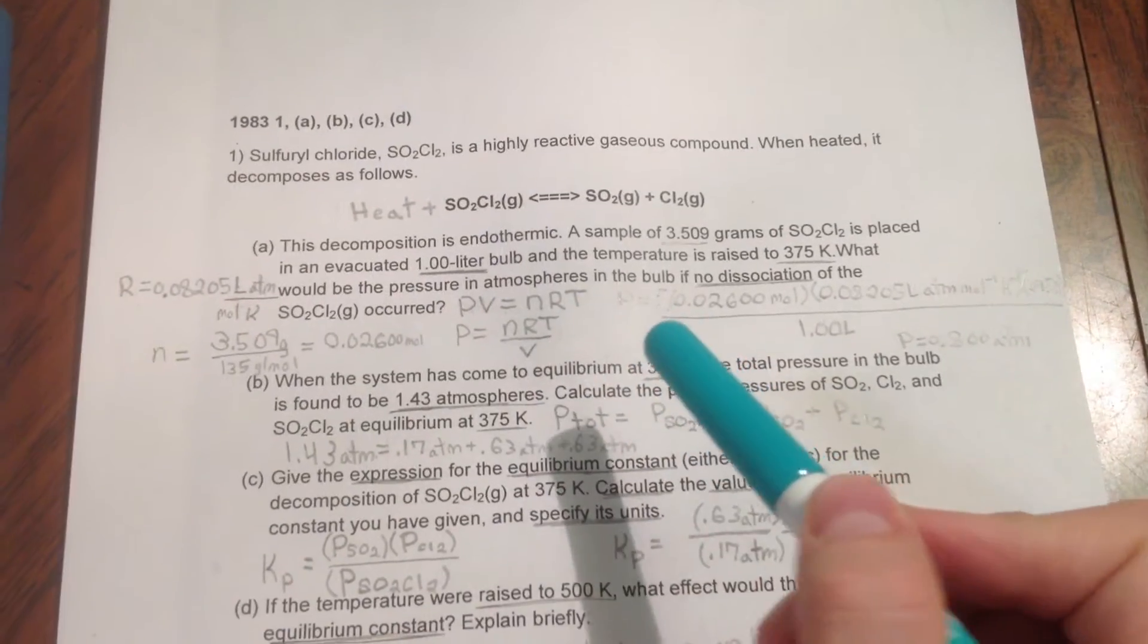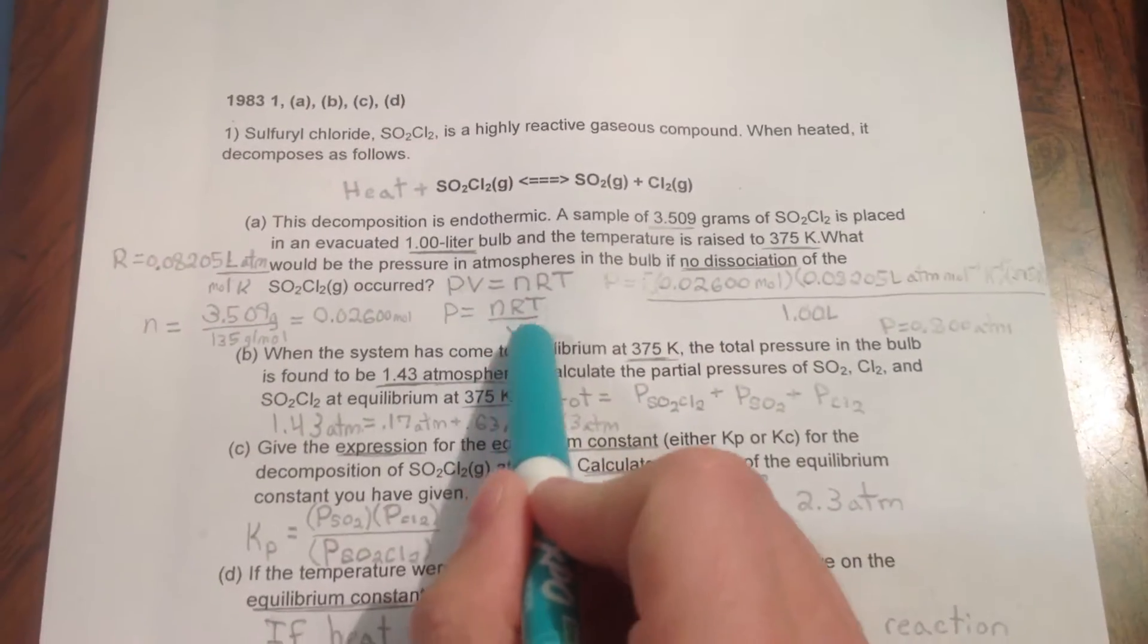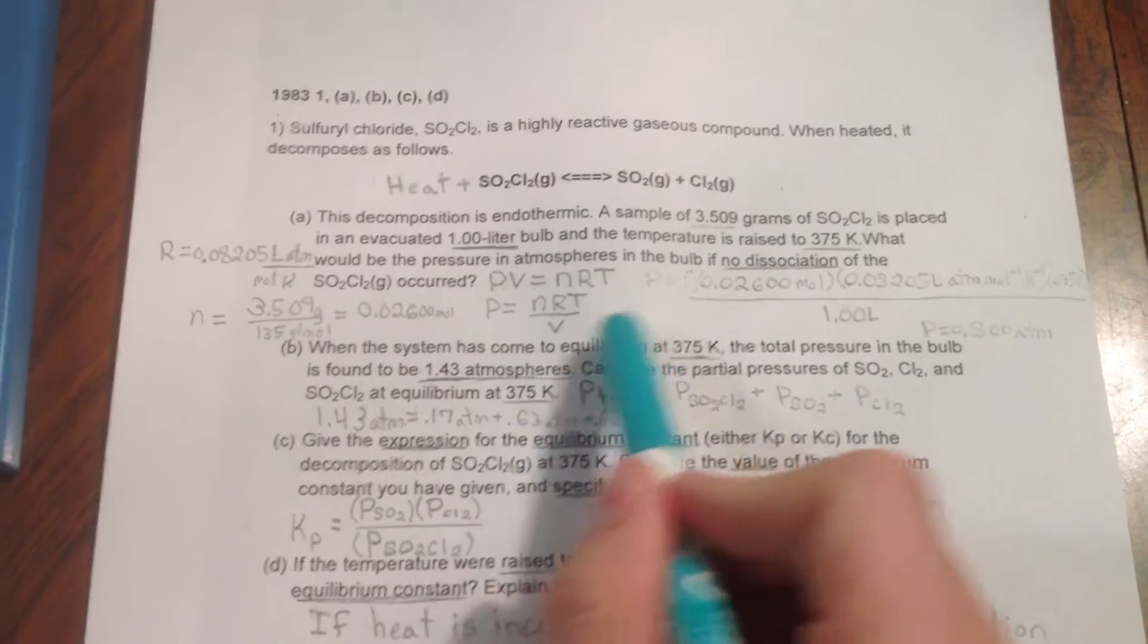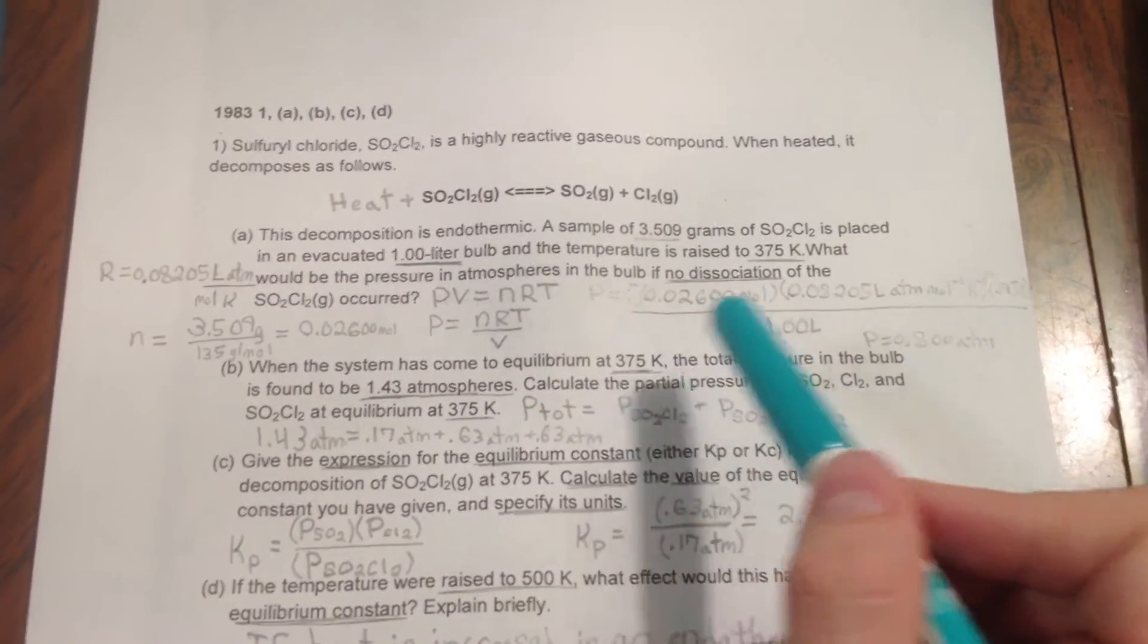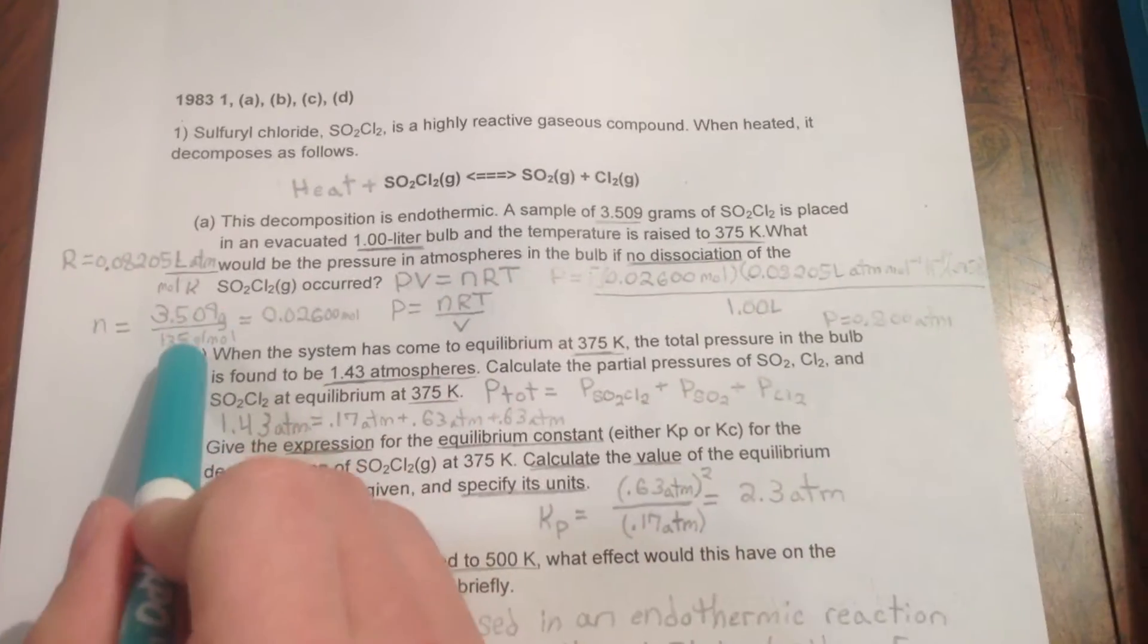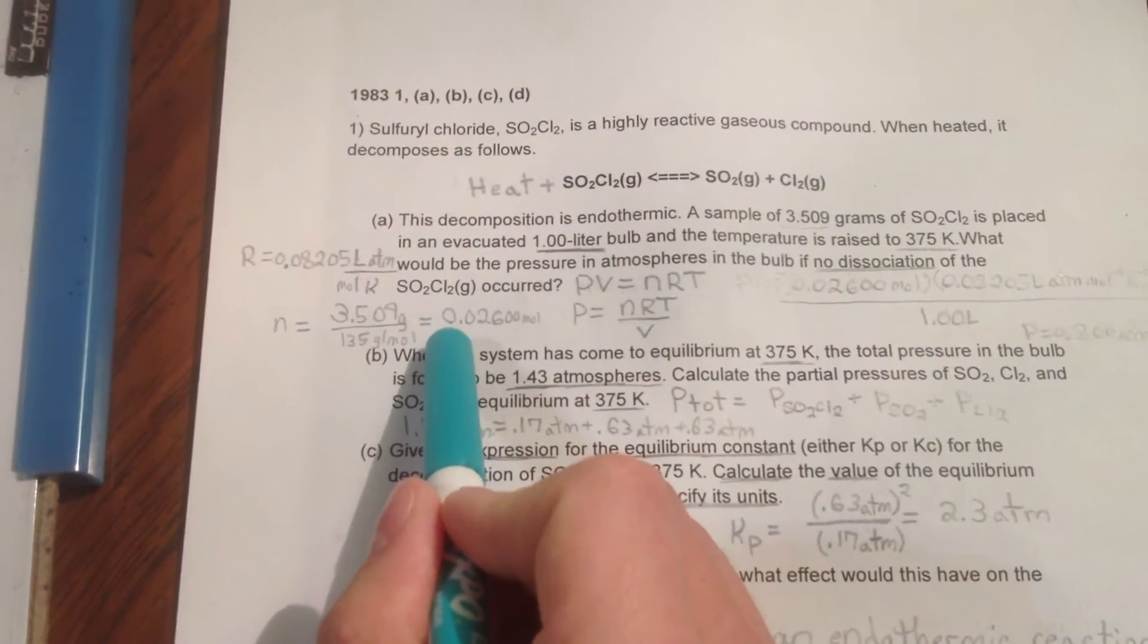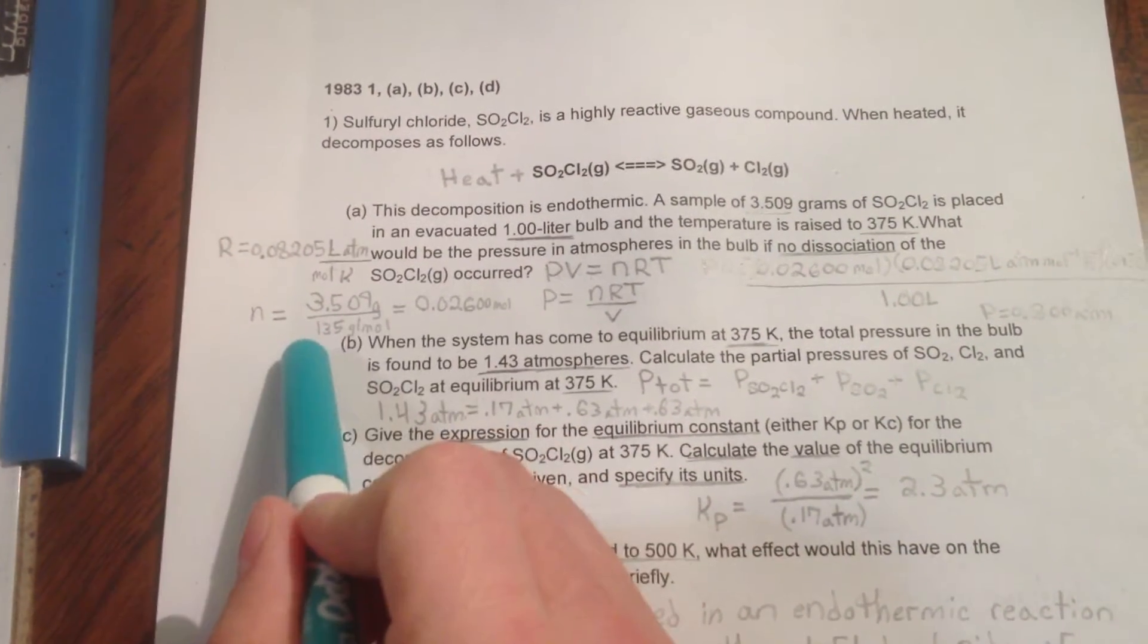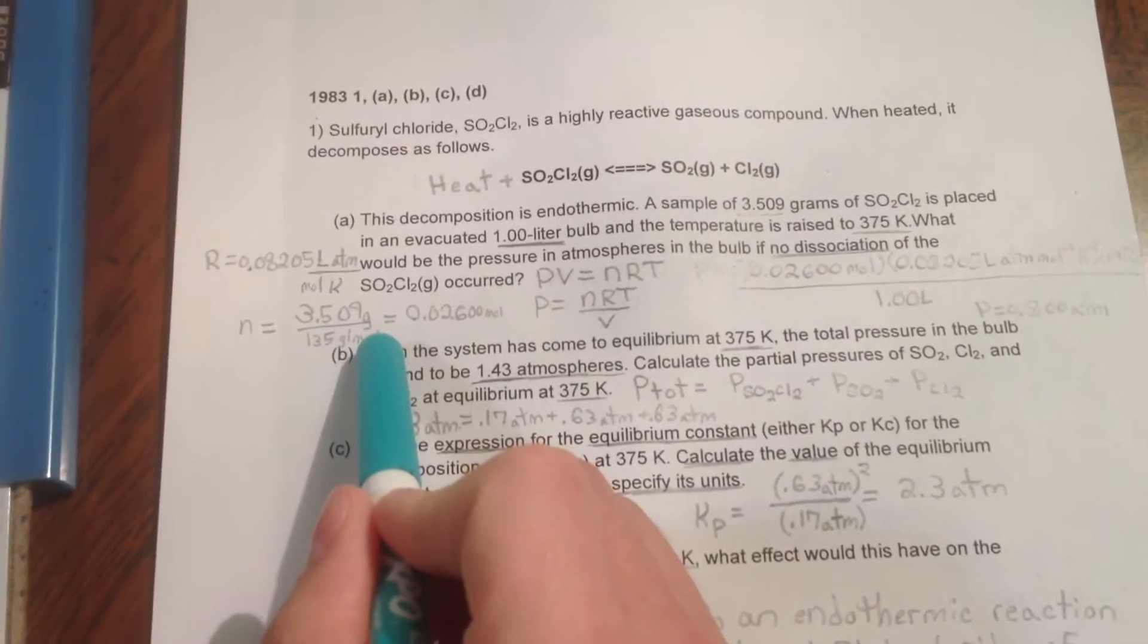We will rewrite as P equals NRT over V. We then substitute values from the problem and our calculations where we obtain the moles, 3.509 divided by 135 grams per mole.